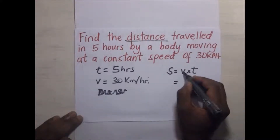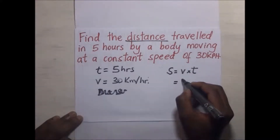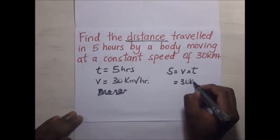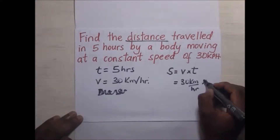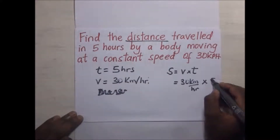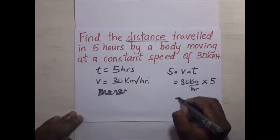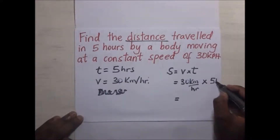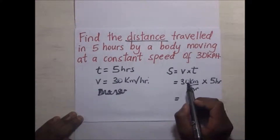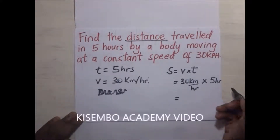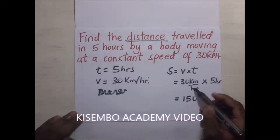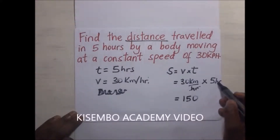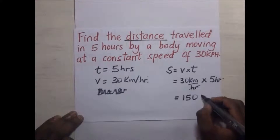Our value of V is 30 kilometers per hour, multiplied by the time taken which is 5 hours. So 30 times 5 is 150, and the hours cancel out, leaving us with kilometers. Our distance traveled is 150 kilometers.